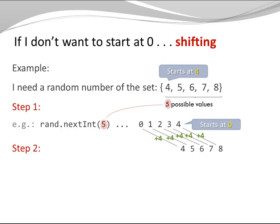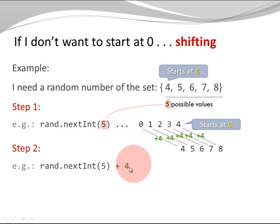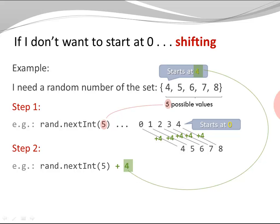I can do that by adding 4. Zero plus 4 is 4, 1 plus 4 is 5, 2 plus 4 is 6, 3 plus 4 is 7, 4 plus 4 is 8. So I'm just saying: give me nextInt(5), which is one of these numbers, and then add 4. At this point I get one of these 5 numbers from my desired set. Notice the number I'm adding here is the start of the list of my desired values.